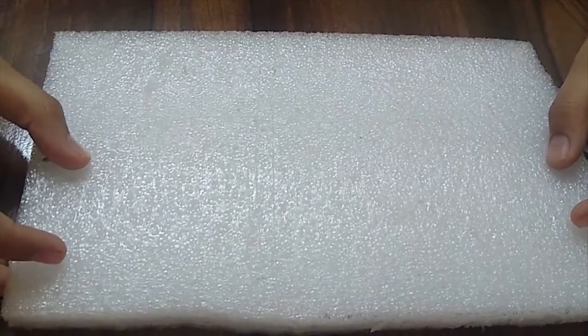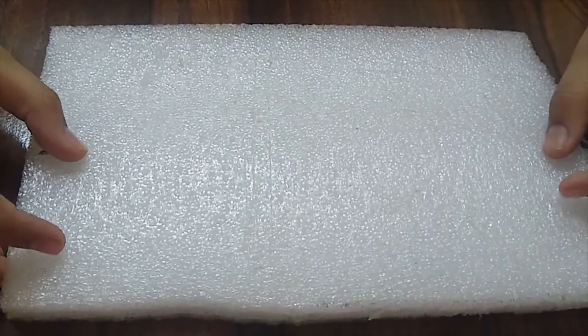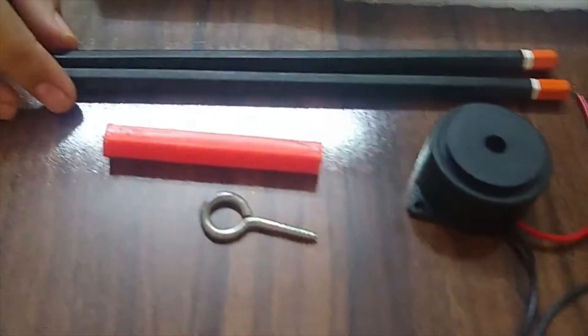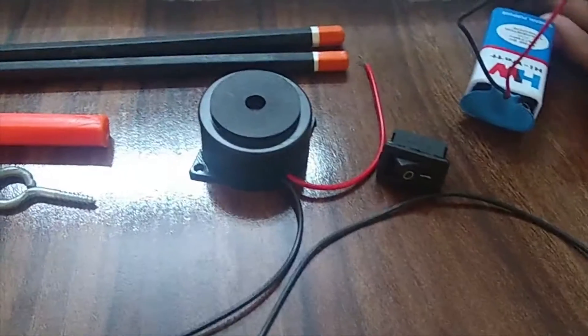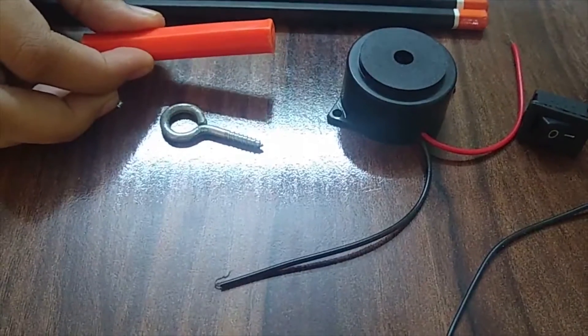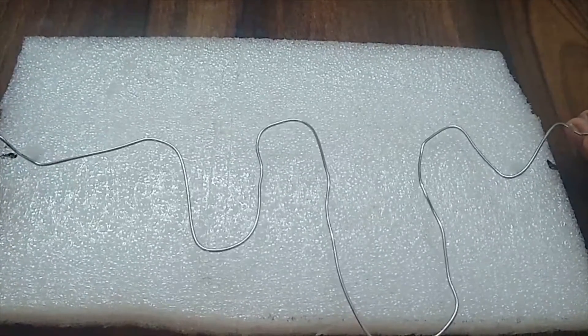Hello friends, today we are going to make an electric concentration game. For this we need a soft foam sheet, 2 pencils, 9 volt battery and connector, switch wire, buzzer, hook and a plastic piece, and a twisted metal wire in this pattern.